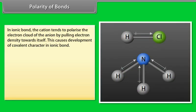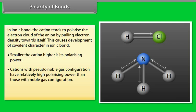Polarity of bonds: in an ionic bond, the cation tends to polarize the electron cloud of the anion by pulling electron density towards itself, causing development of covalent character in the ionic bond. Smaller the cation, higher is its polarizing power. Cations with pseudo-noble gas configuration have relatively high polarizing power than those with noble gas configuration. Larger the size of the anion, higher is its polarizability.